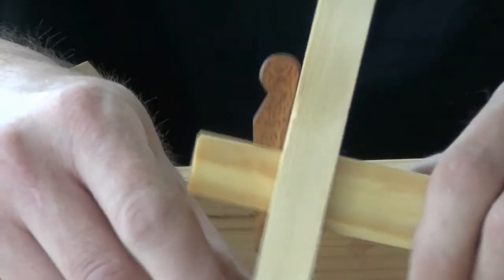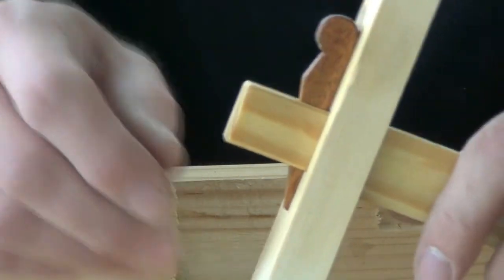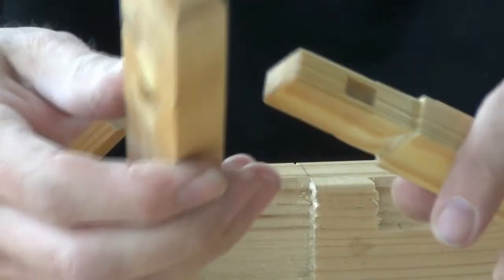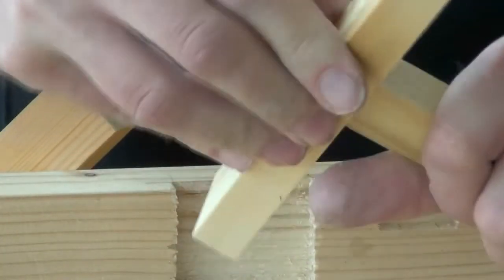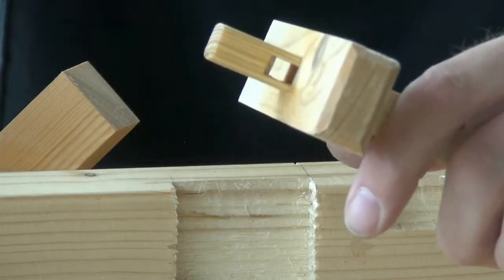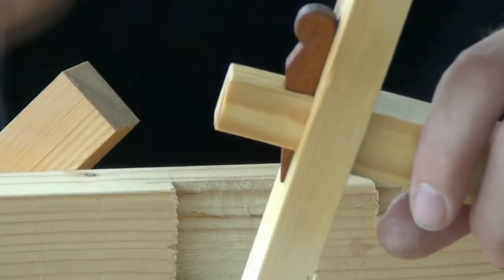Here's another variant of a wedged mortise and tenon joint. This is a loose wedged one. A tight fitting tenon passes straight through the mortise. It itself has a mortise through it, which receives a wedge. And that locks everything in place.